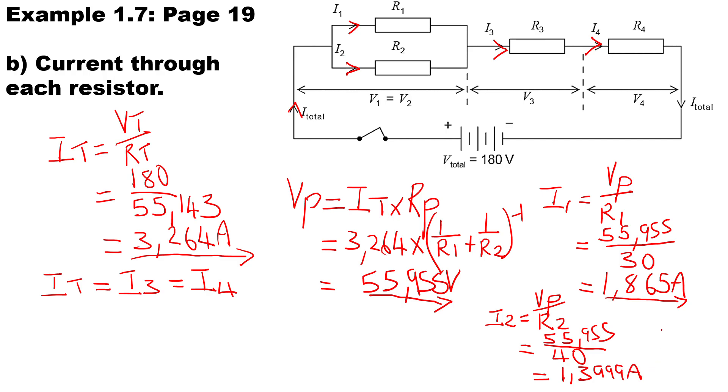Therefore, the current through the second branch will be 1.399 amps. Don't forget to round off to three decimal places. As a check, I1 plus I2 should be equal to the total current.